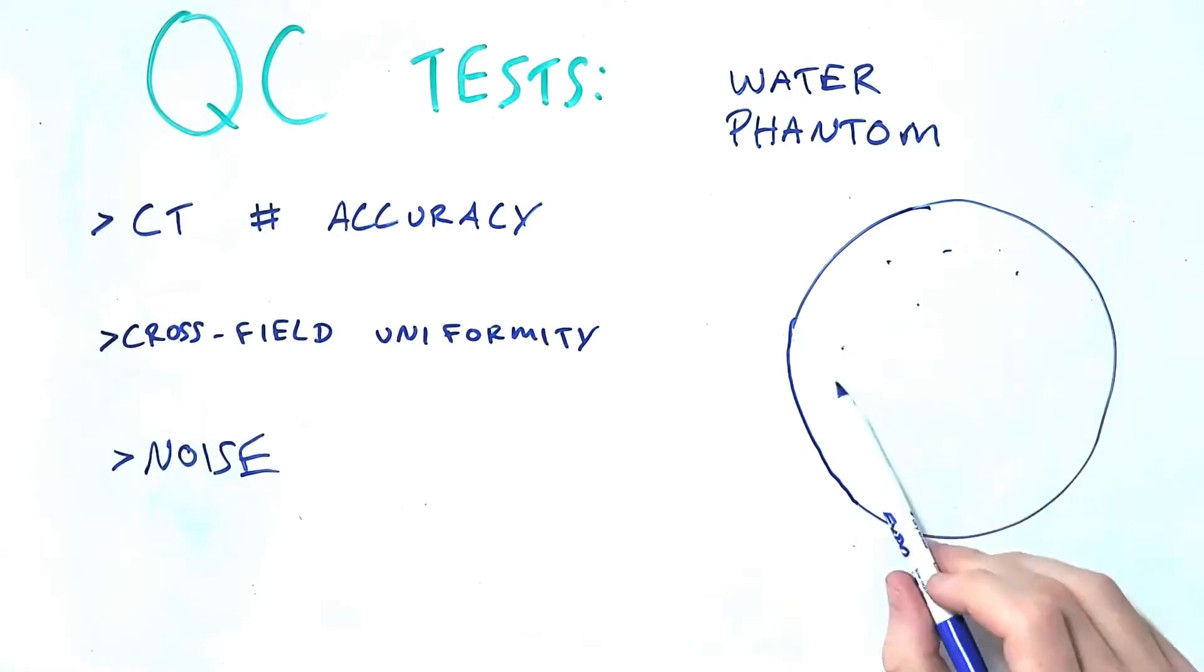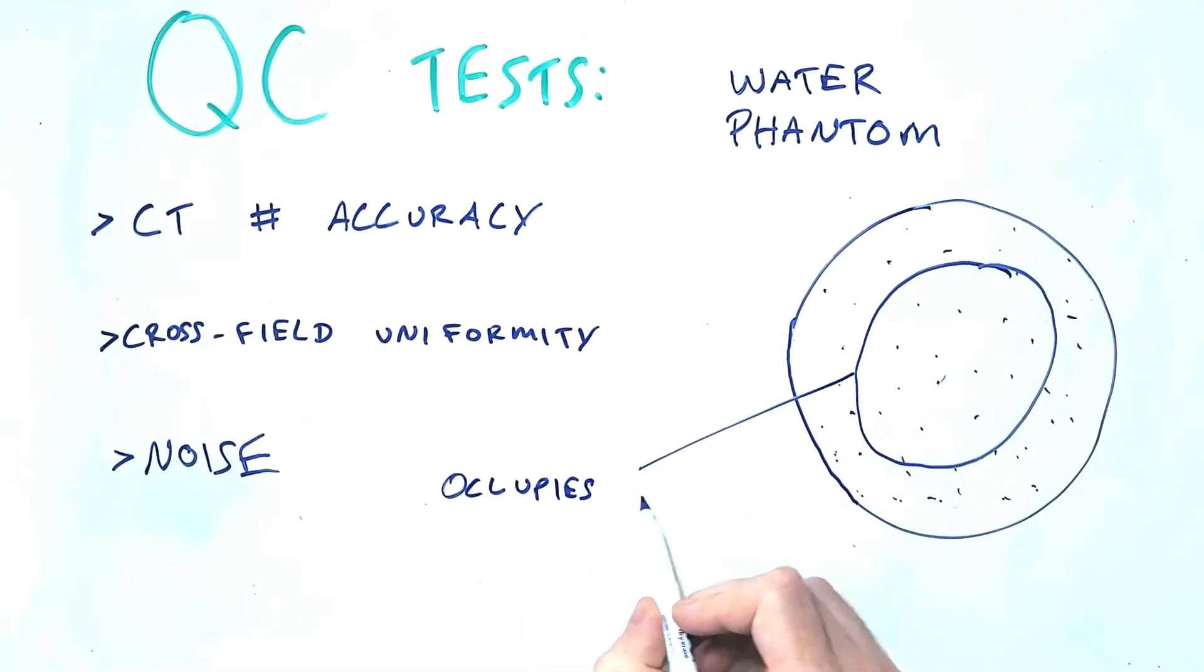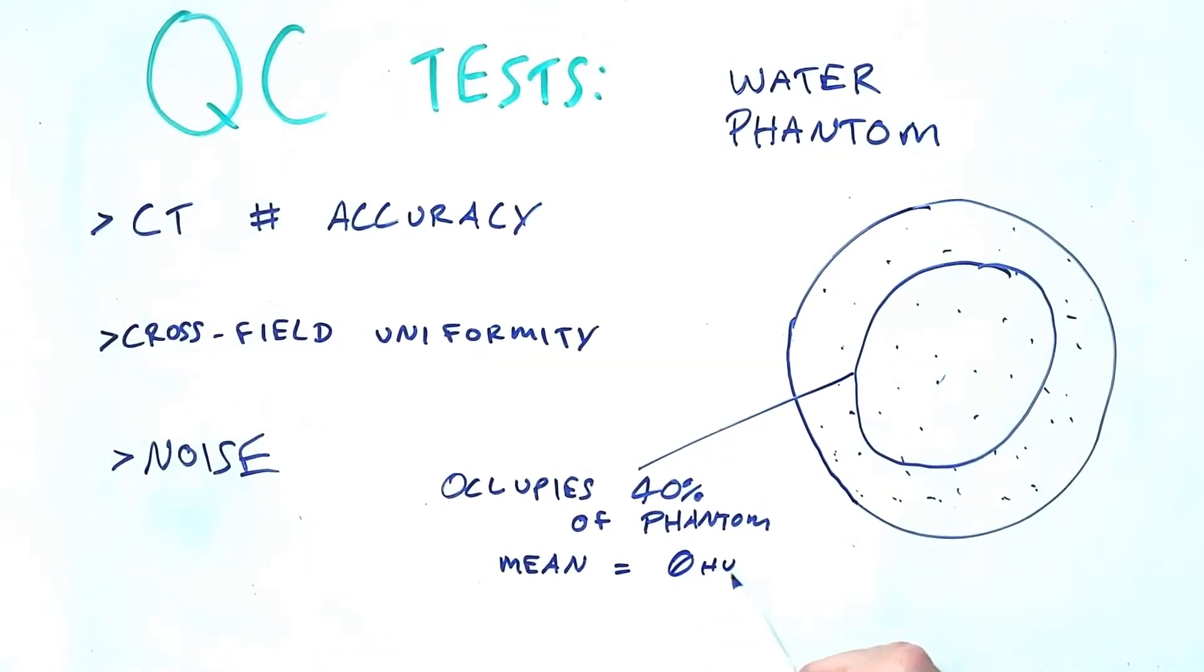The final test we can easily do with the water phantom is to assess for noise. Noise is assessed by taking a large ROI occupying at least 40% of the size of the phantom and assessing the standard deviation within that area. We know we have a homogeneous phantom so any deviation in measured values in that area is noise. As with uniformity the standards for noise are set relative to the scanner's baseline values.